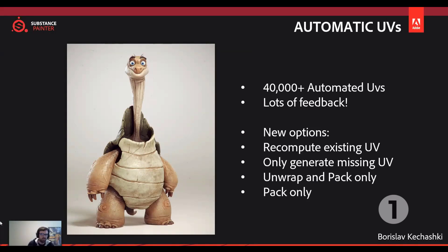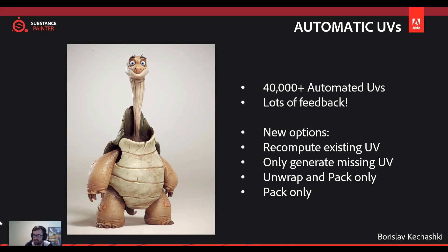The very first update I'll start off with is automatic UV. We've talked about automatic UV and done a whole lot of videos about it. It's really cool to see that they've gotten a huge set of feedback, and it's reassuring to see that the Substance team is taking these things into consideration. You'll now be able to recompute existing UVs — if you've defined UV seams but haven't unwrapped, you can now unwrap, pack, or do a simple packing directly in Substance.